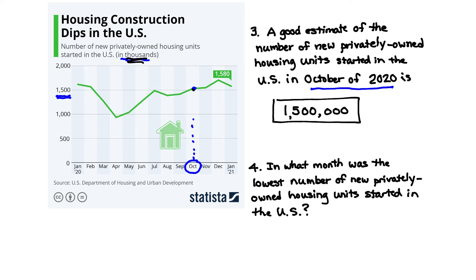For the second question: in what month was the lowest number of new privately owned housing units started in the U.S.? The lowest number is the one closest to zero on the graph. That minimum point corresponds to the month of April 2020, so the answer is April 2020.